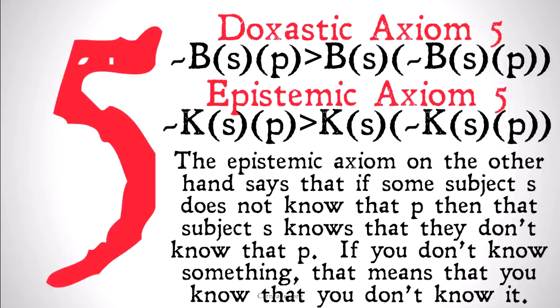The epistemic axiom, on the other hand, says that if some subject S does not know that P, then that subject S knows that they don't know that P. If you don't know something, that means that you know that you don't know it.